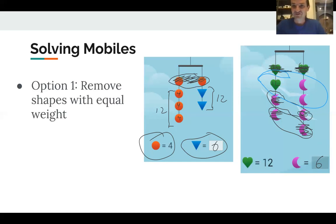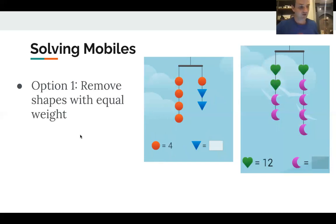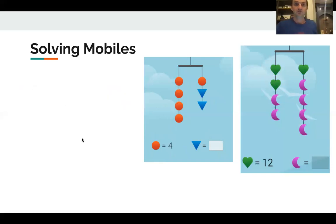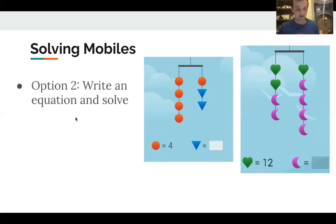So that's one of the way that we can do this, right? Just removing things that have an equal weight and then we get what's left over. Another way that we could do this is our other option is to write an equation and solve this problem. So for example, the equation for the left-hand mobile, there's four circles that each have a weight of four pounds. Well, that's 16 pounds. And over here, we have a four pound circle plus two triangles. 16 equals 4 plus 2T.